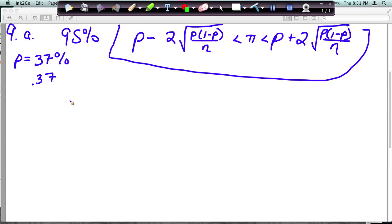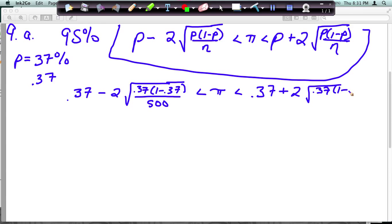So I'm going to go ahead and plug this in. So it's saying 0.37 minus 2 times the square root of 0.37 times 1 minus 0.37 divided by our sample size, which was 500. And this is going to give me my 95% confidence interval, so I'm going to do 0.37 plus 2 times 0.37. Again, 1 minus 0.37. The only difference here, remember that these are going to be the same numbers at the end. I'm just going to be adding it and subtracting it, so you don't have to do this on your calculator twice.